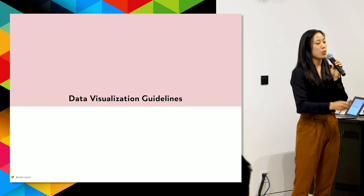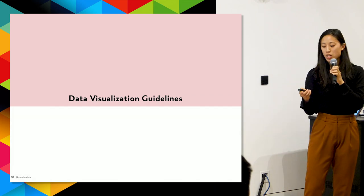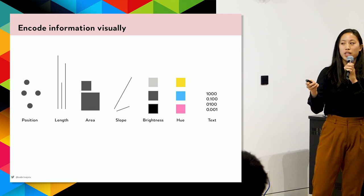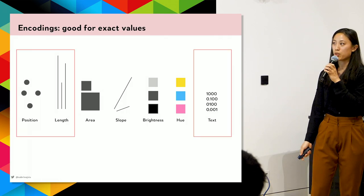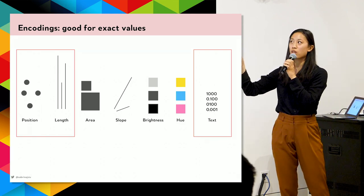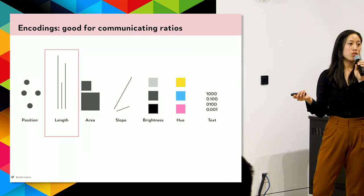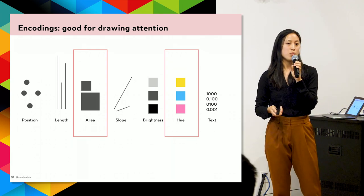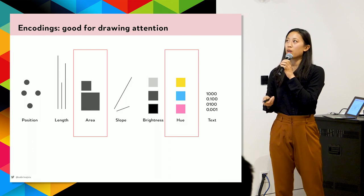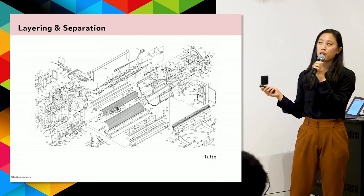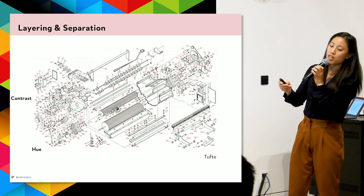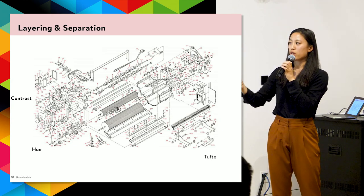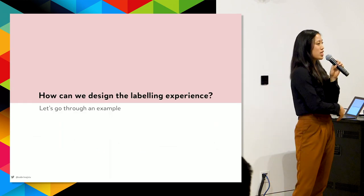The outputs of machine learning models can often be visualized. Key visualization techniques include position, length, area, size, slope, brightness, hue, and text — each good for different things. Position, length, and text are good for exact values; length communicates ratios well; area and hue are good for drawing attention. Using contrast and hue, you can separate different layers on screen and make certain information stand out.